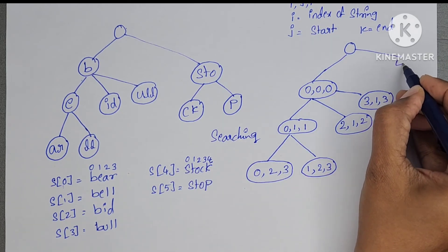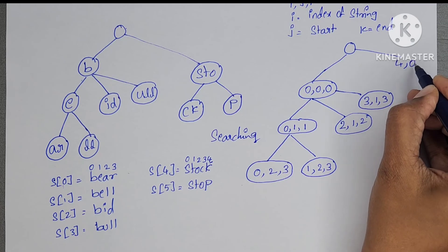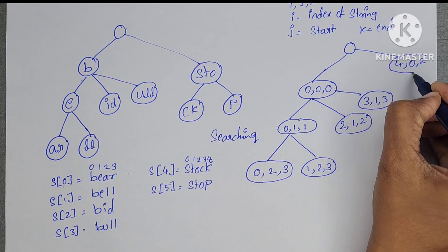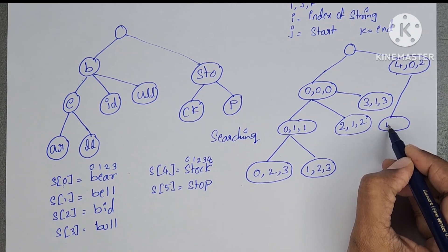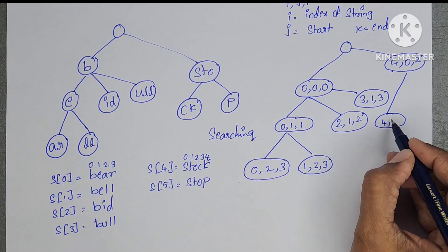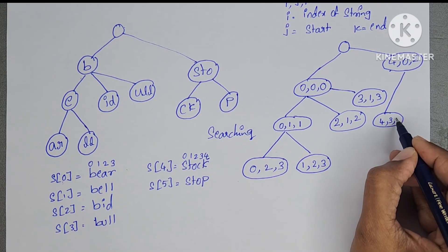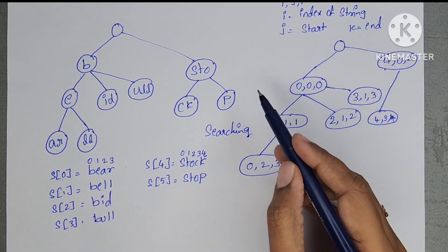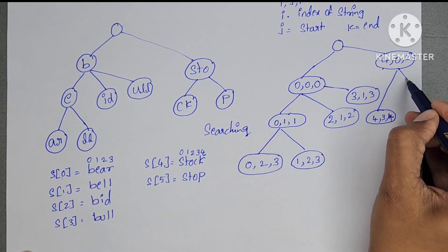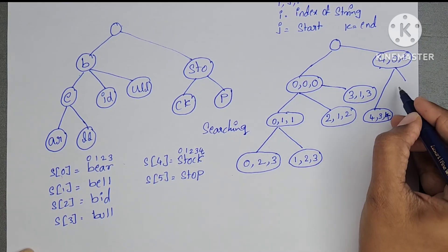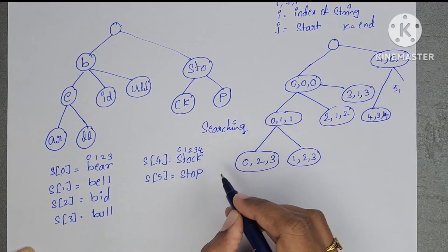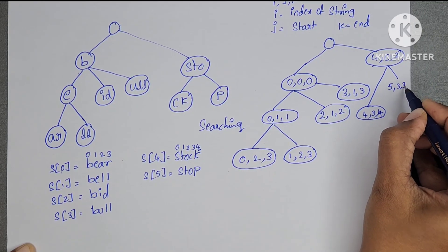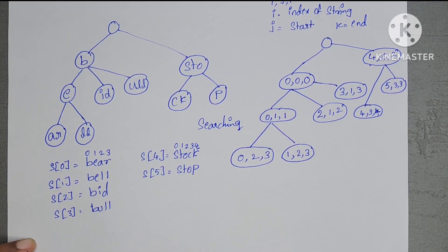For the combined node S-T-O: it is present in the 4th string, starting index is 0, ending index is 2. For node C-K: also present in the 4th string, starting index is 3, ending index is 4. For node P from 'stop': it is present in the 5th string, starting index is 3, ending index is 3.